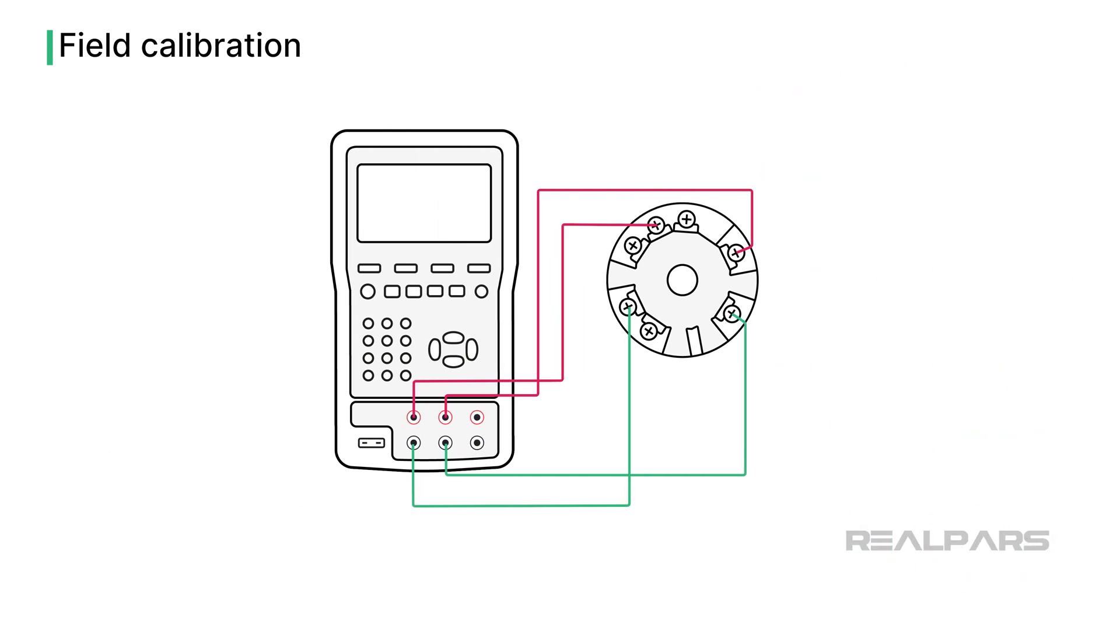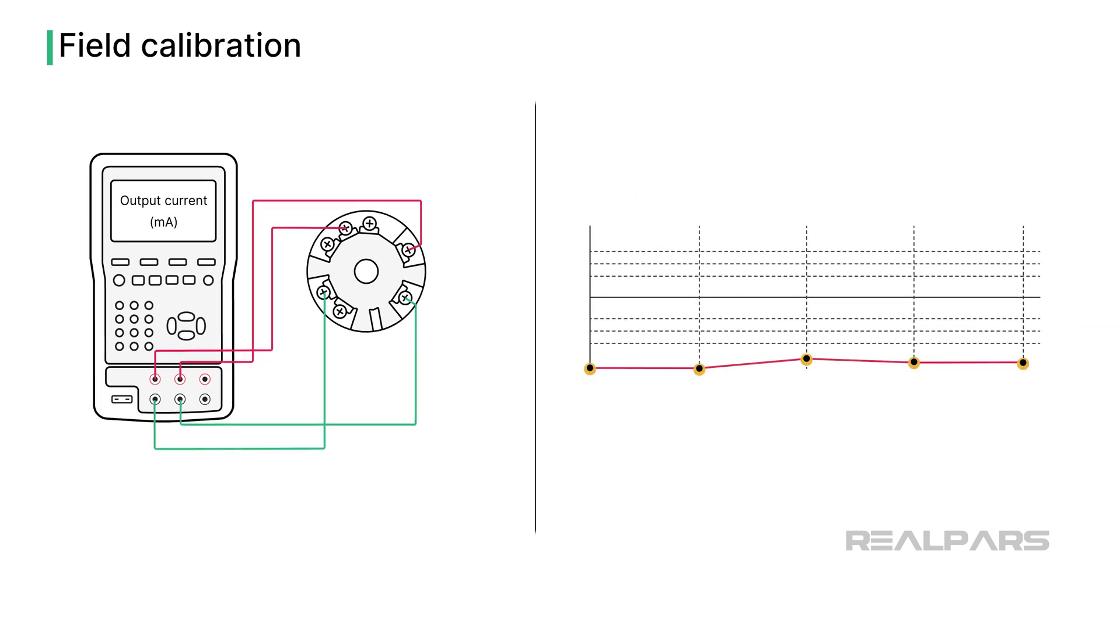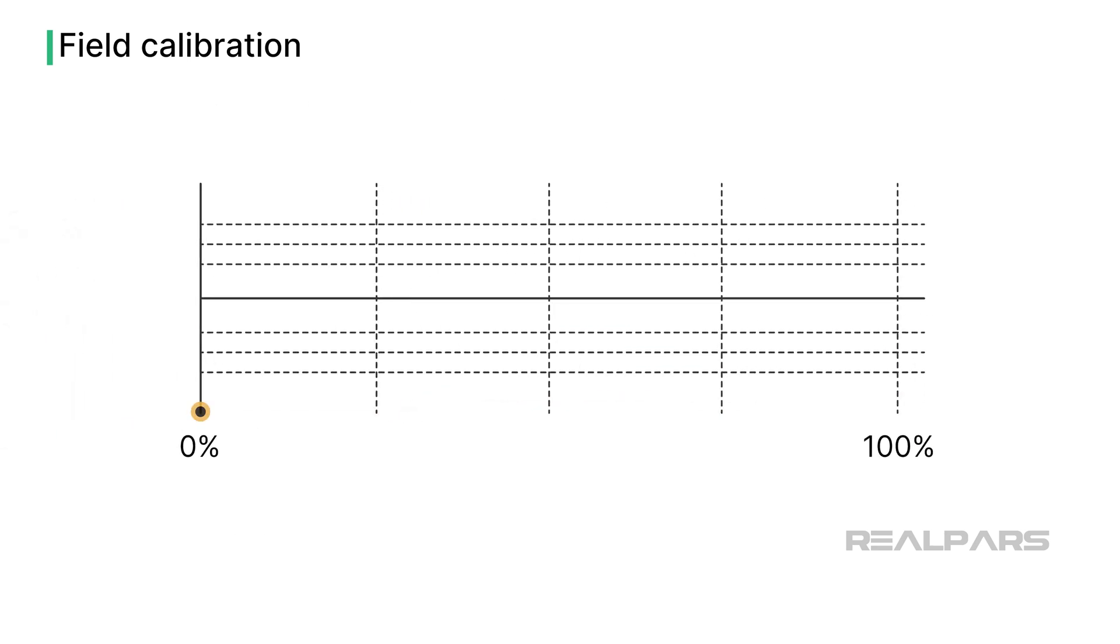The calibration process checks that the transmitter correctly interprets the simulated resistance input and produces the appropriate current output. This is typically accomplished by performing a five-point test between 0 and 100 percent of the transmitter calibration range, with tests at 0 percent, 25 percent, 50 percent, 75 percent, and 100 percent.